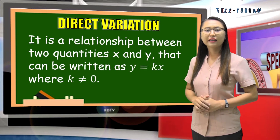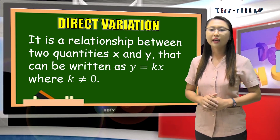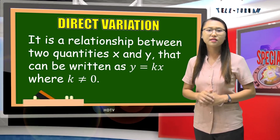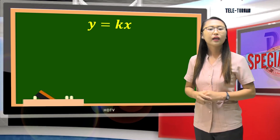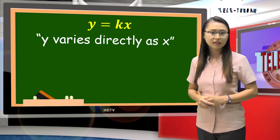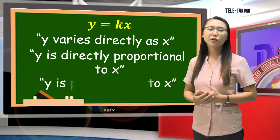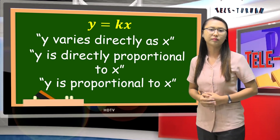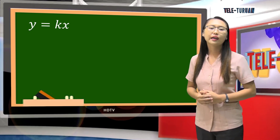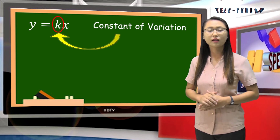Direct variation is a relationship between two quantities, x and y, that can be written as y is equal to kx, where k is not equal to zero. y is equal to kx may be read as: y varies directly as x, y is directly proportional to x, or y is proportional to x. In y is equal to kx, k is what we call the constant of variation that relates the two variables.